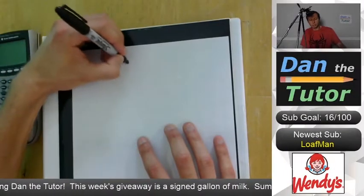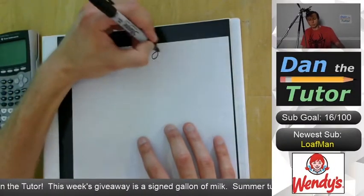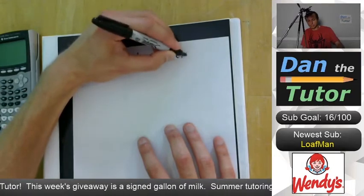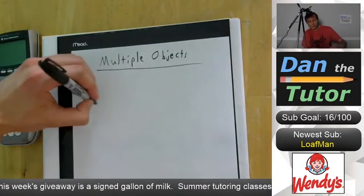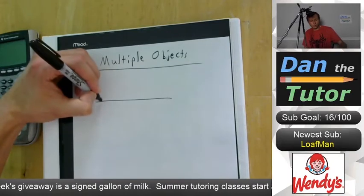So now let's look at an example involving forces with multiple objects. Let's say I have a rope pulling three boxes.